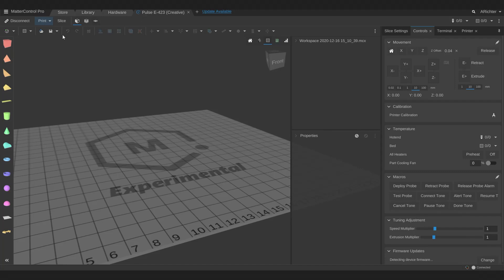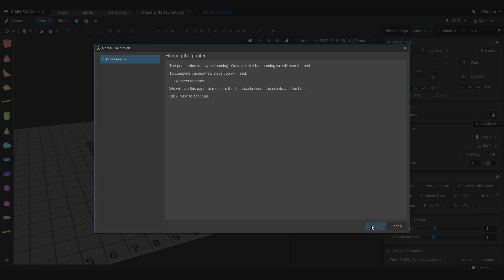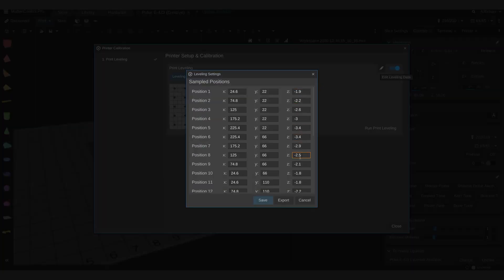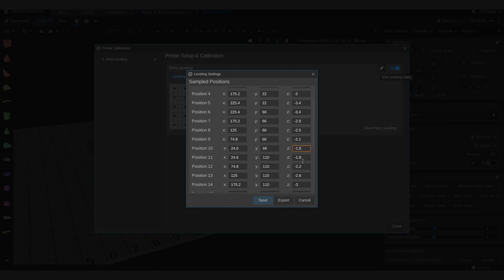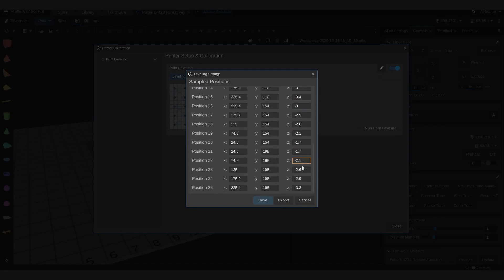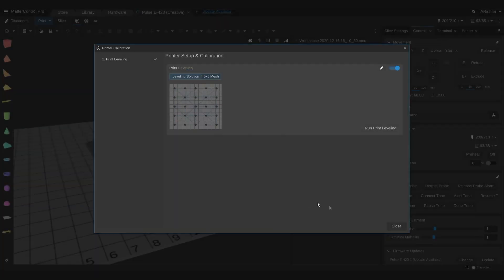What is software leveling? Within Matter Control, our slicing software, there exists a guided wizard that will allow even the most extremely out of shape printer beds to have a uniform first layer. By manually mapping the bed of your 3D printer, Matter Control is able to adjust the Z values in the sliced G-code so the nozzle is constantly moving up and down to achieve a consistent distance from the bed throughout the print.